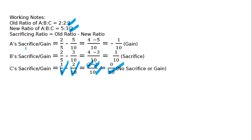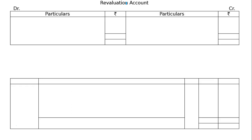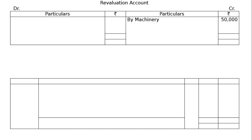Jo revaluation ka profit aayega — A's capital account debited to B's capital account — it is gaining to sacrificing. Revaluation account banao, jo profit aayega usko gaining to sacrificing kar denge; loss aayega toh ulta karenge, taaki aage ke liye jo balance sheet banega usme purana values appear kare. Revaluation account ka format — ledger format — ab dekhte hain.